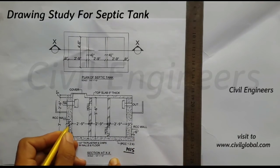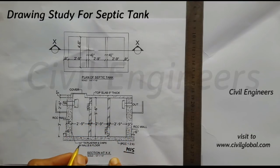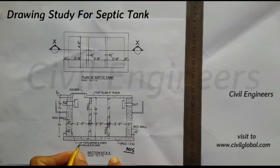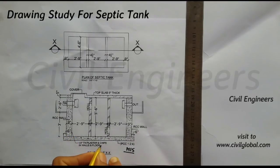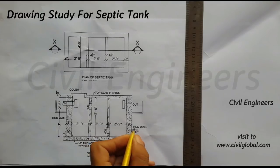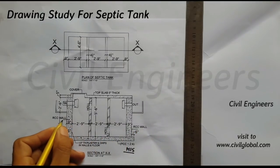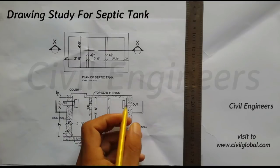These are the external walls — 9 inches on each side. The thickness of the plaster is 0.5 inches on the inner side. This is the thickness for the plaster on wall and floor. This is the RCC wall, and this one is also an RCC wall — these are concrete.